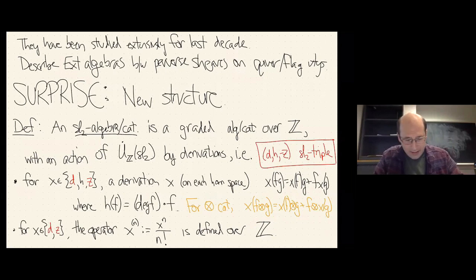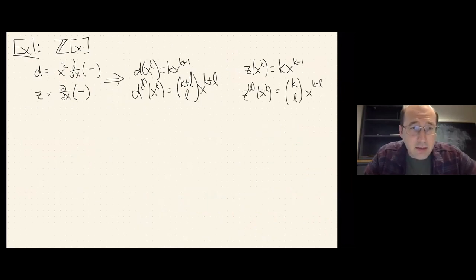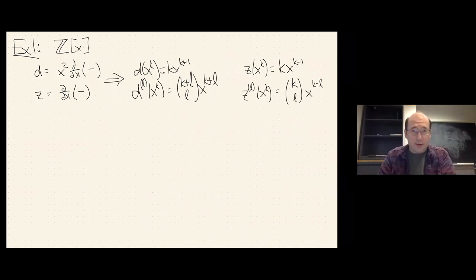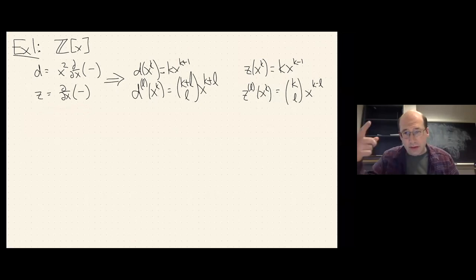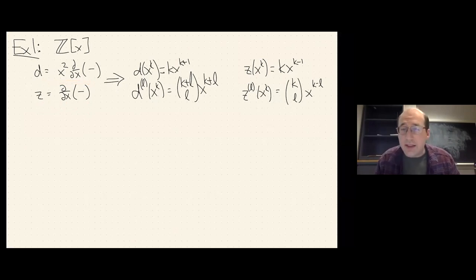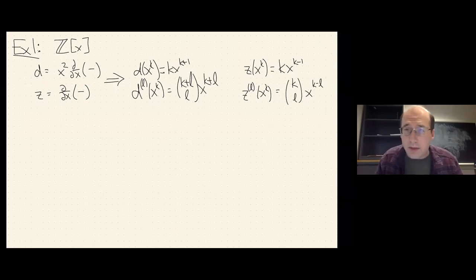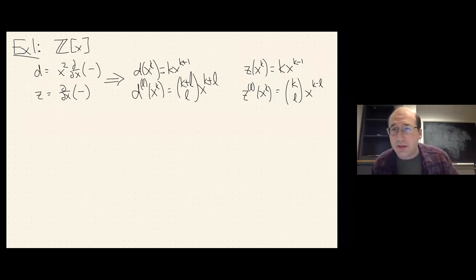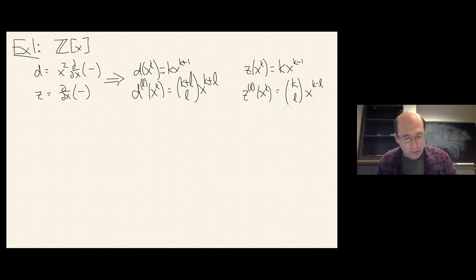Let me give an example of an SL2 algebra. Start with the polynomial ring in one variable. The lowering operator, which lowers the degree of a polynomial by one, is d/dx and the raising operator is x² · d/dx. Both of these are derivations. You can compute what they do to all monomials, and then compute what the divided powers do — you see they are defined integrally. So this is an example of an SL2 algebra, and the degree of x is two.